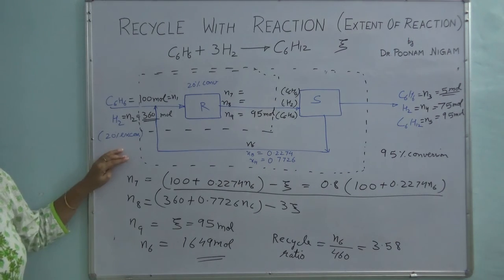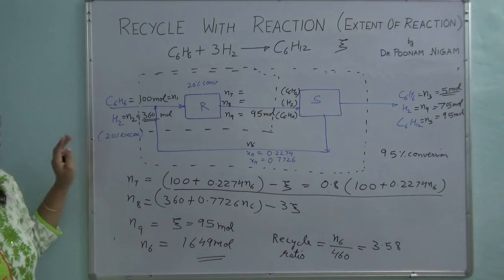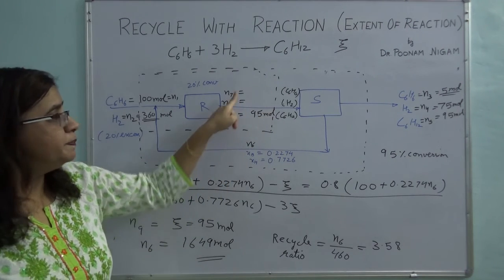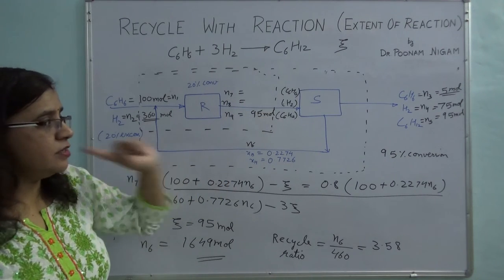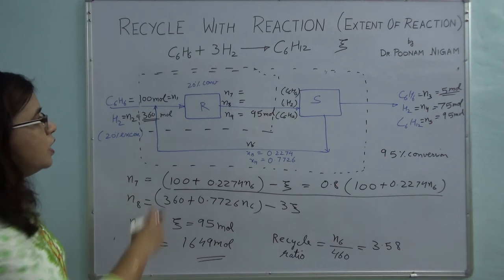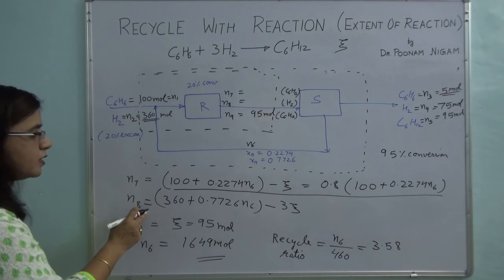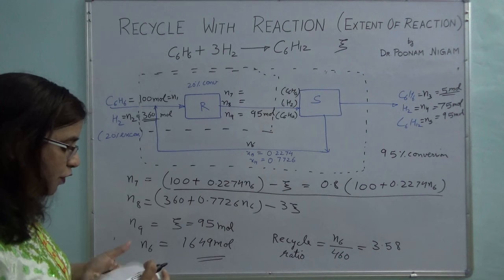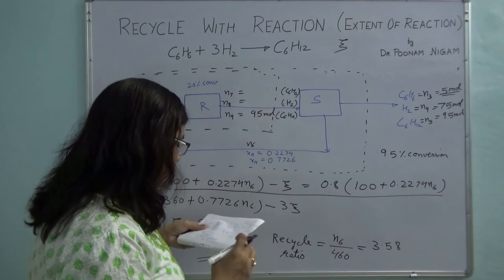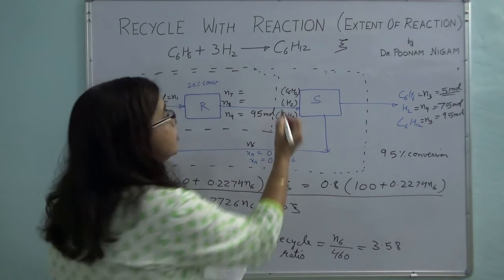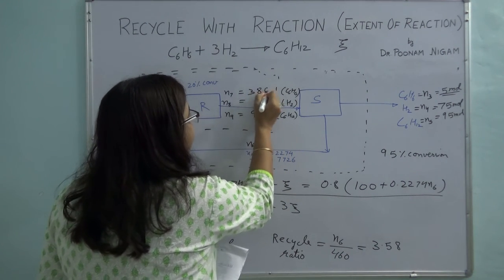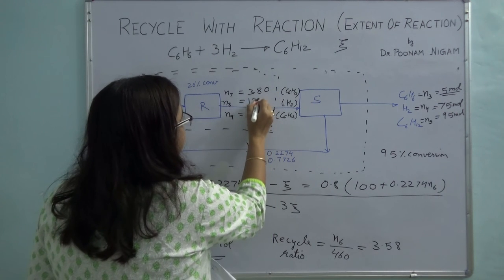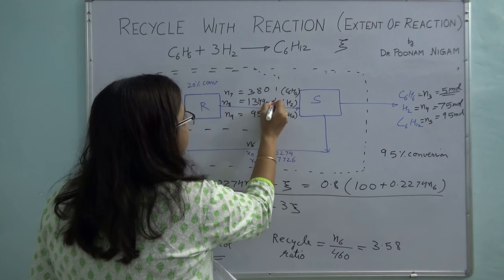I have solved this problem. If you are also asked for the composition of the stream coming out of the reactor, solve the earlier equations for N7 and N8. The values are: N7 = 380 moles and N8 = 1349 moles. You can solve it on your own and verify.